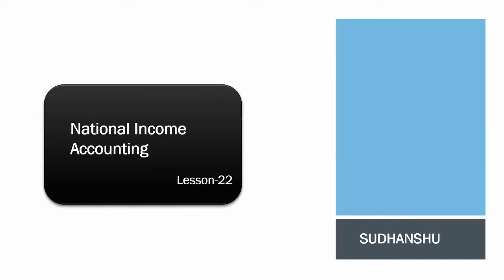Hello and welcome to Blade Ladder. I am Sudhan Shio and swagat hai aap sabhi ka national income accounting ki series mein. 22nd lesson hoga hamara and aaj hum padhenge ki what is NNP at market price — MP stands for market price — and what is NNP at factor cost — FC stands for factor cost. So without any further delay, let's get started.